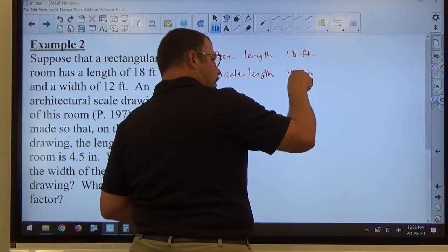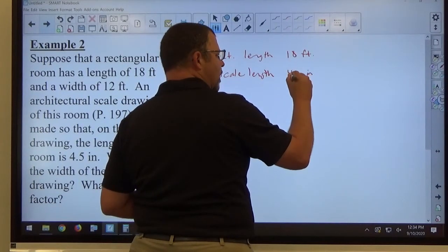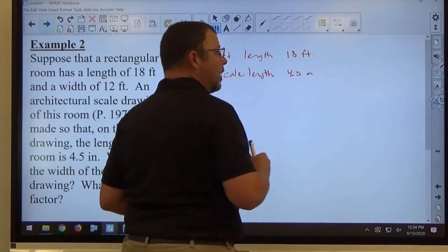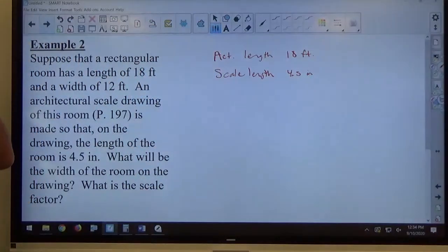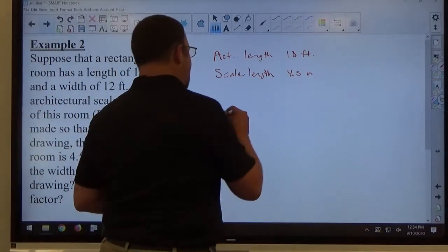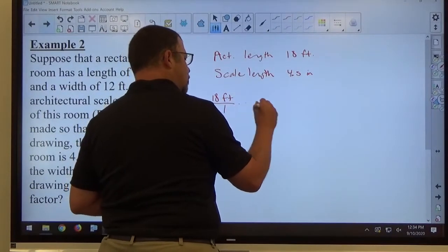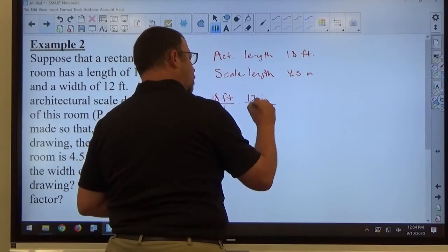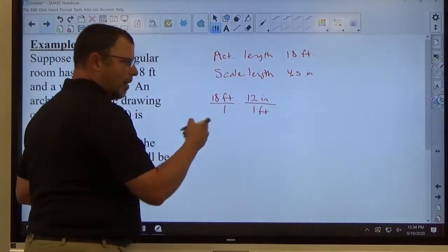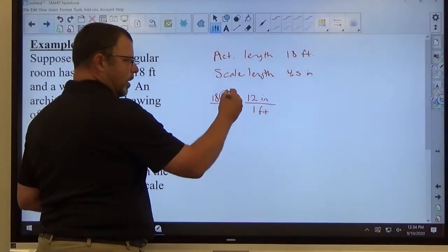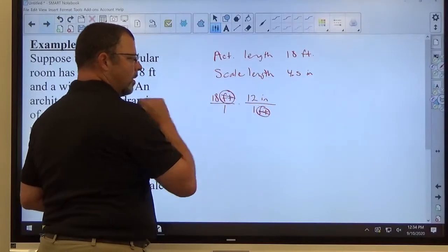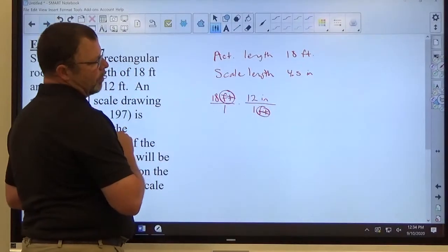Again, we have a unit disagreement here, so changing the units so that they're the same would be helpful. It's easier to make feet become inches than inches become feet, so we don't have to deal with such drastic fractions. So, I would go 18 feet times 12 inches over 1 foot. Every time I'm making this so that the unit of foot on top and bottom cancel.